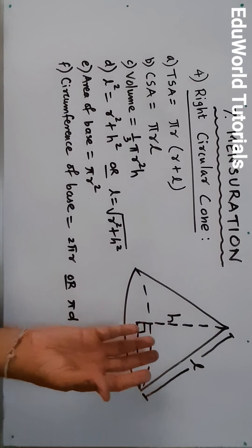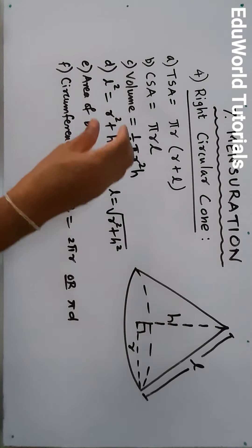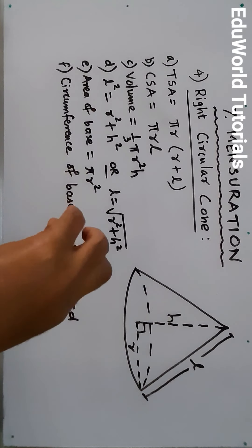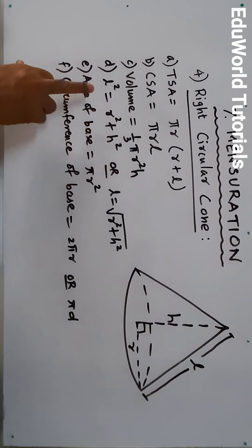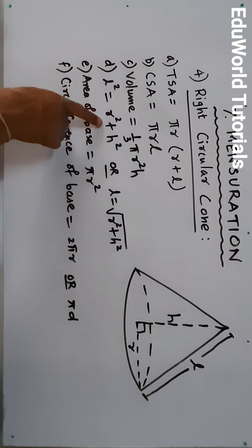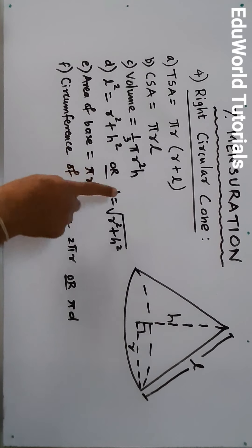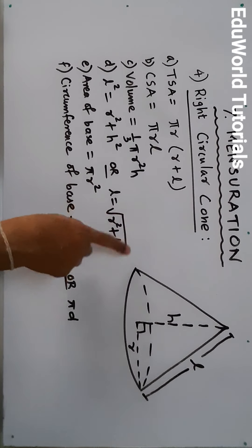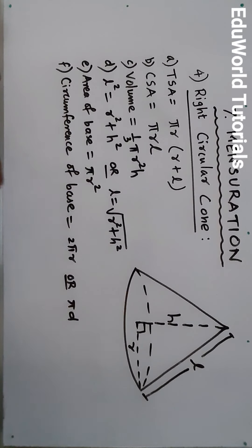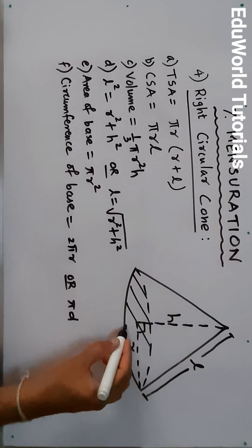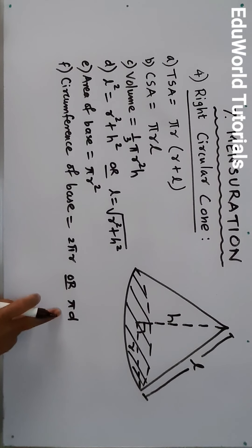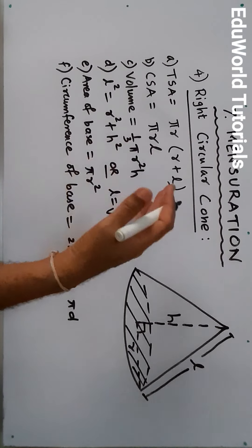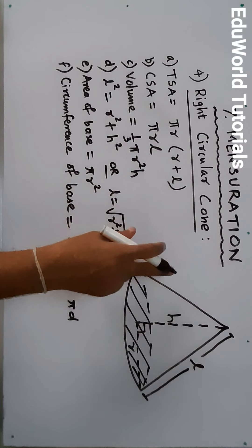Volume of the cone — if the cone were hollow, the space inside it — is (1/3)πr²h. You also eat ice cream cones and fill ice cream in the hollow part; that is the volume, also called capacity. To get the slant height: L² = r² + h², so L = √(r² + h²). Area of the base = πr², and circumference of the base = 2πr or π×d. These are all the formulas for the right circular cone.